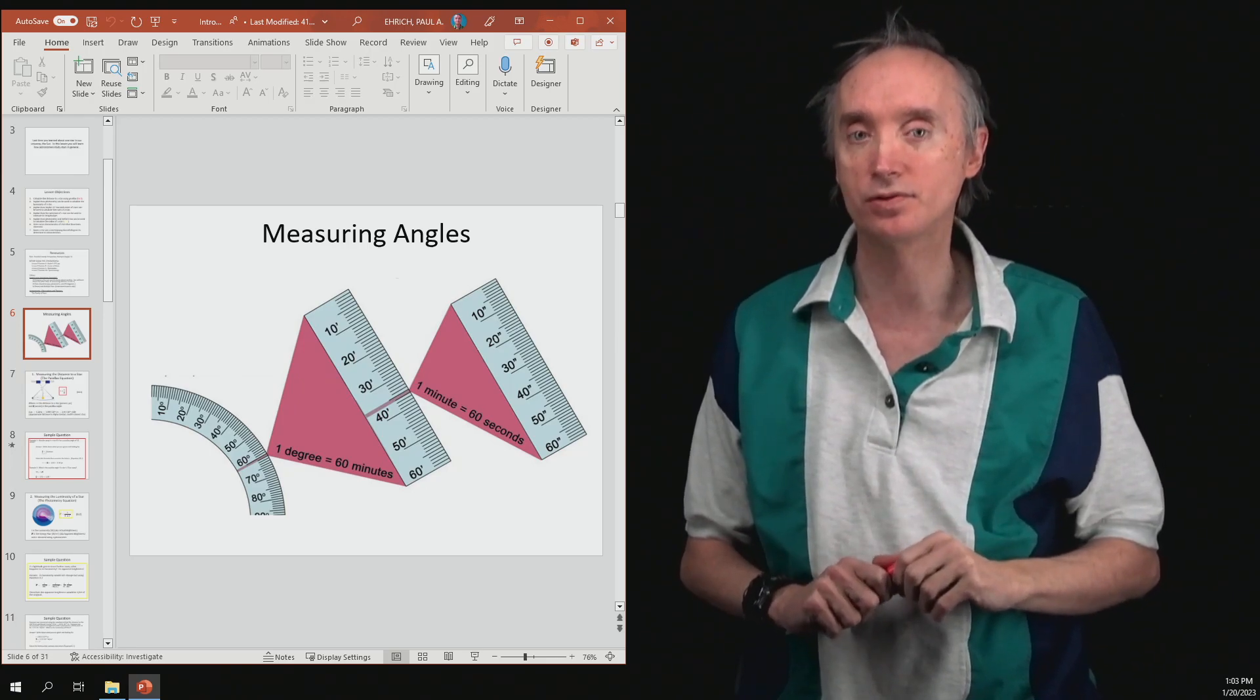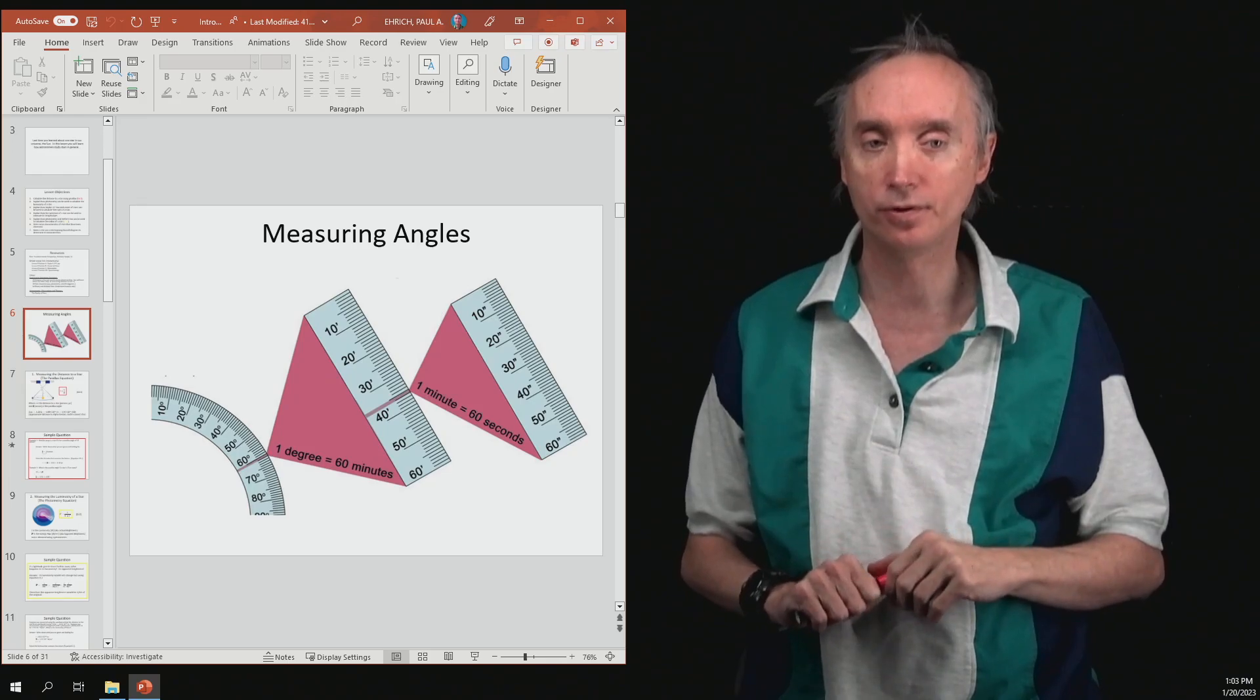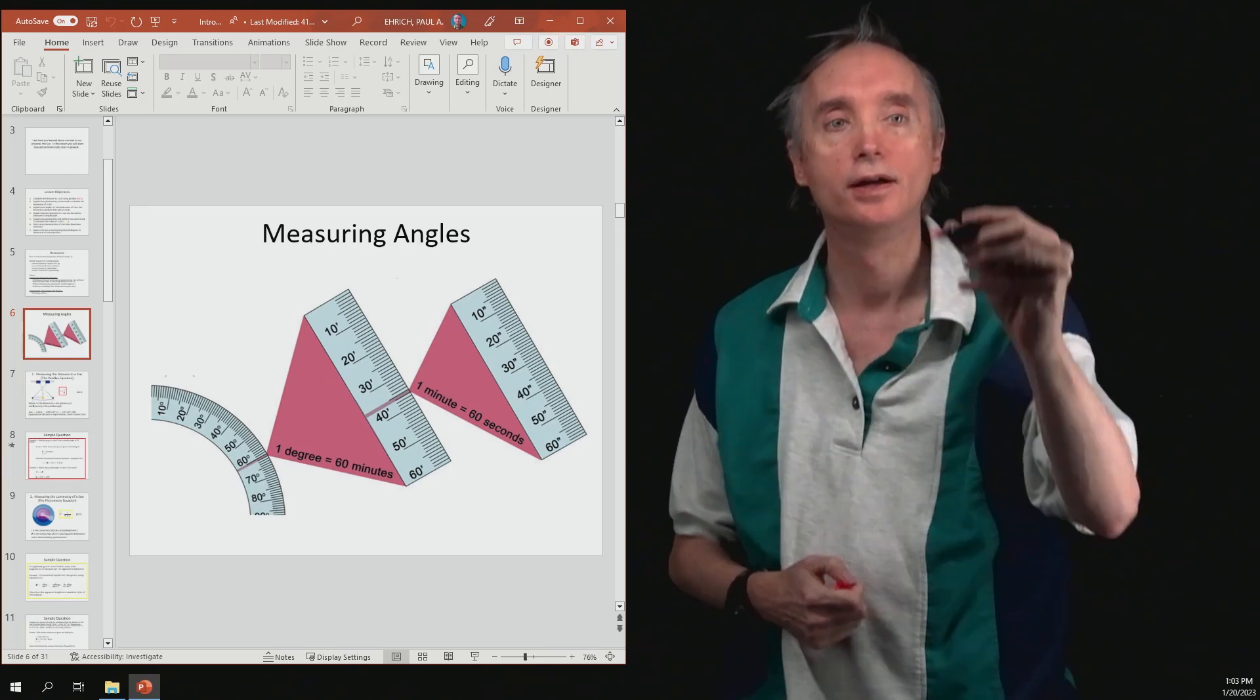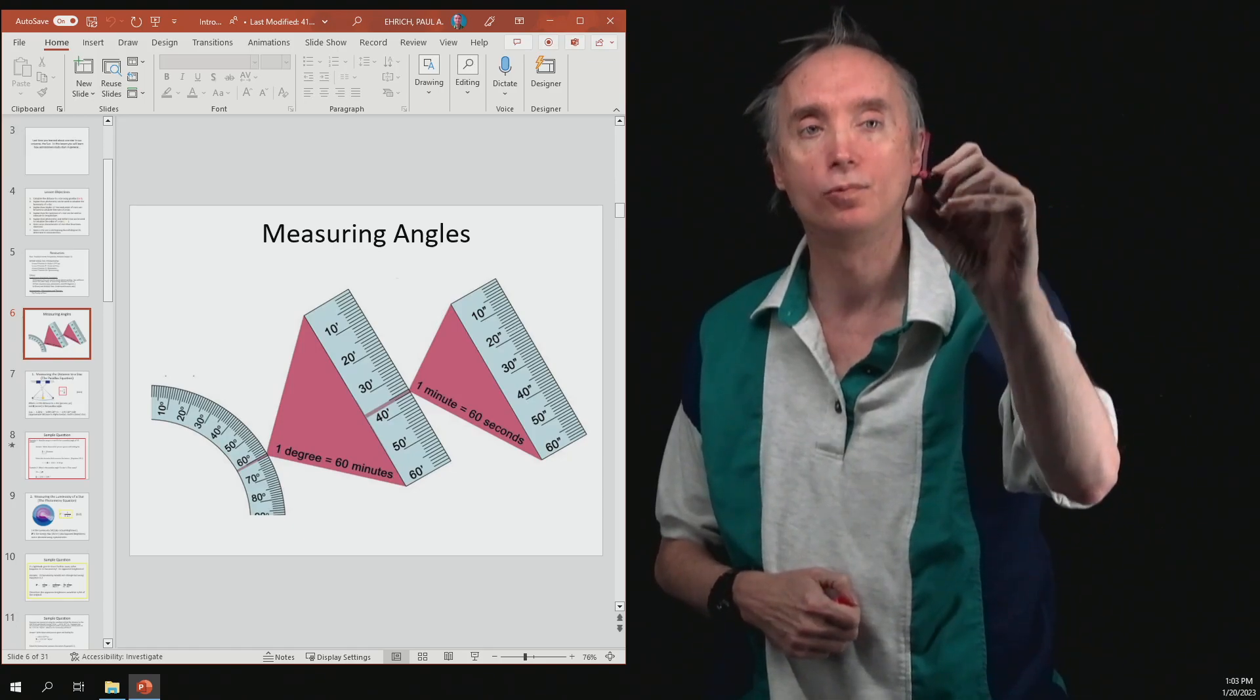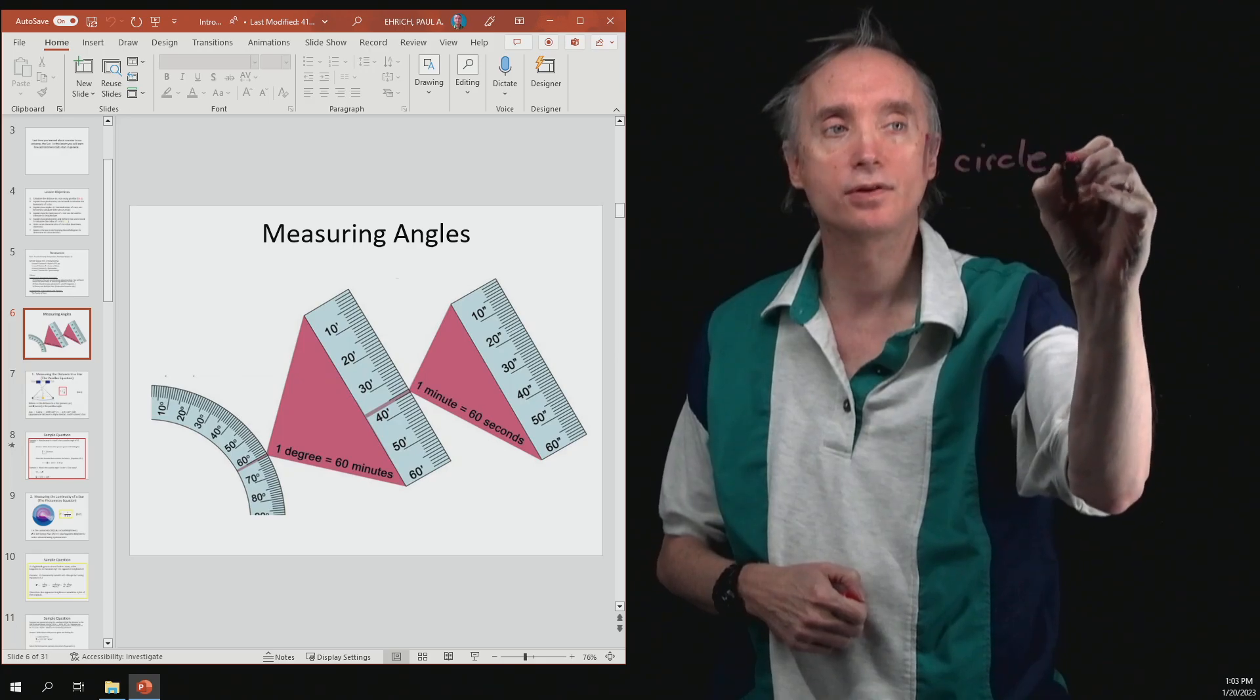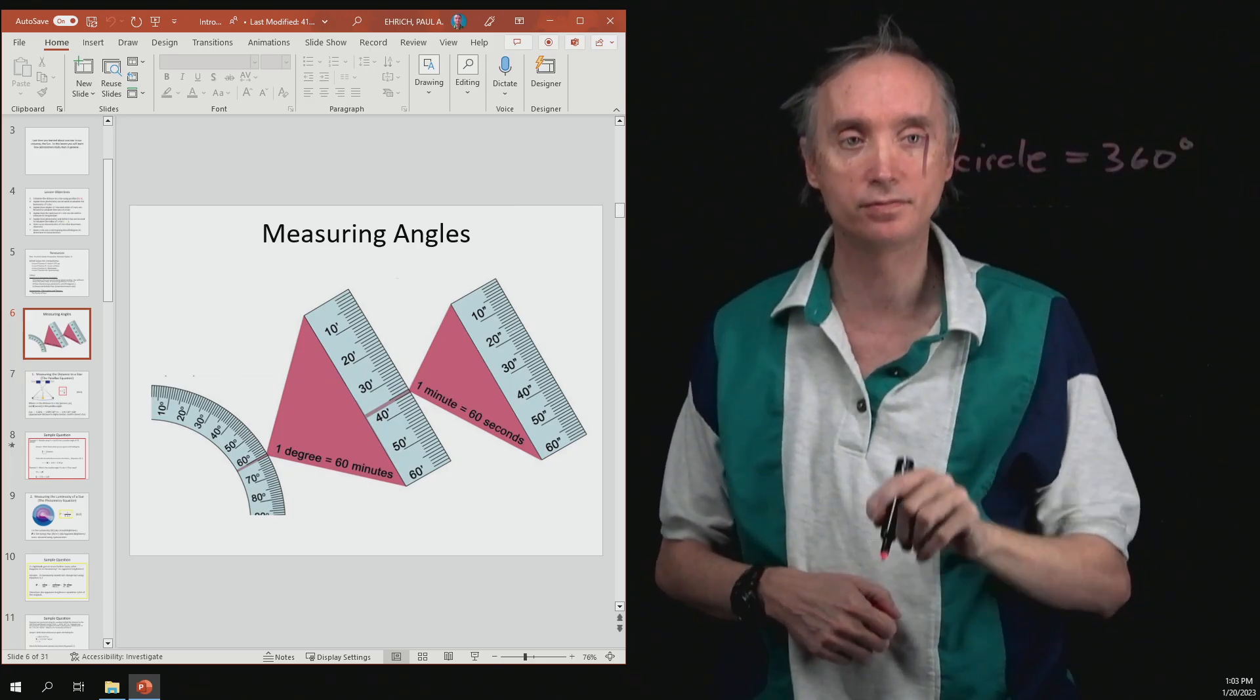I'm hoping you're all familiar with the degree, so you should know that if you go around in one circle, that's equivalent to 360 degrees if you go completely around.